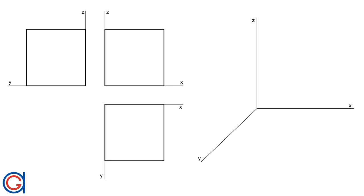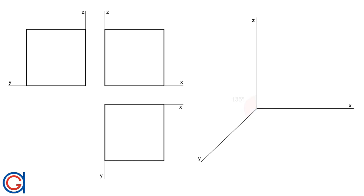In both oblique projections, cavalier and cabinet, you can see the X and Z axis form a 90 degree angle, which is going to be the plane which has the same shape and magnitude as the original drawing. The other axis Y usually forms a 135 degree angle with the other axes, but can also form different angles.